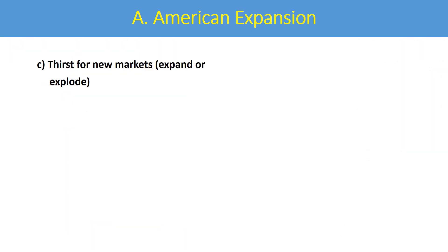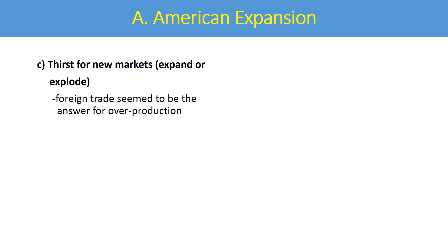The third factor is the thirst for new markets. There was a feeling in the United States that if we didn't expand, we were going to explode as far as markets were concerned. Foreign trade seemed like the answer for overproduction in the United States — think of the Rockefellers, Carnegies, and Vanderbilts producing a lot of different things. It was almost like we need to go somewhere else with it, and foreign markets seemed like the answer.